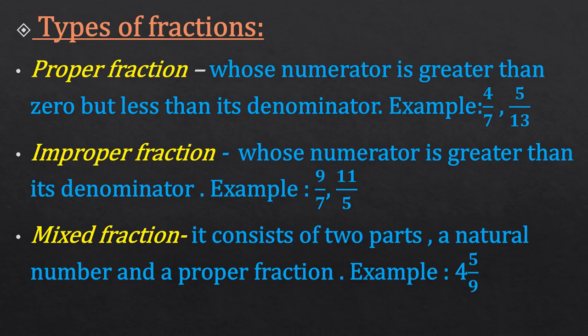The next fraction is mixed fraction. A mixed fraction is a combination of two parts: one is a natural number and the other is a proper fraction. For example, 4 and 5 upon 9 — here 4 is a natural number and 5 upon 9 is a proper fraction, that is why it is a mixed fraction.